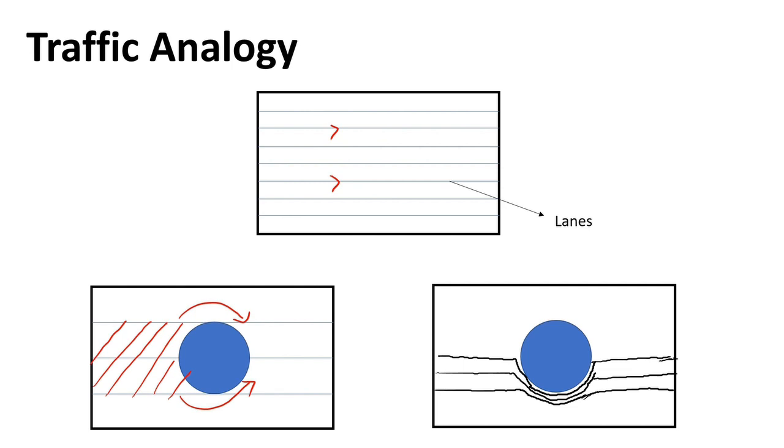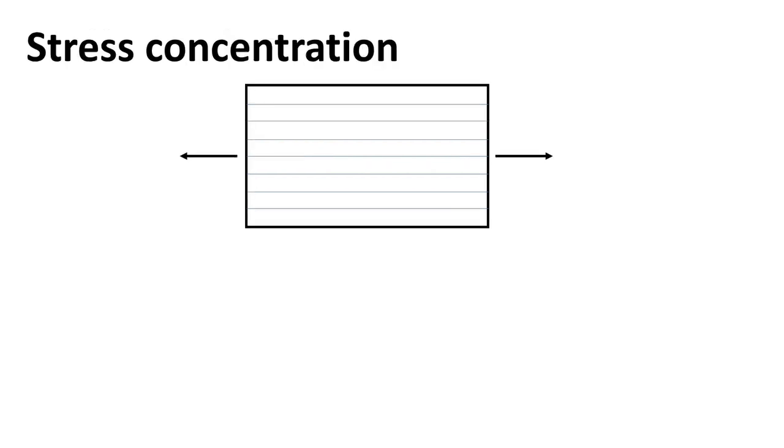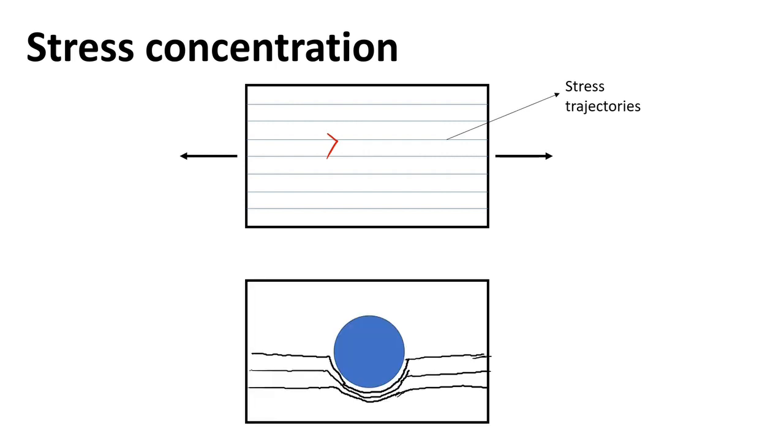Note that there is a congestion here, and hence accidents may happen. Switching gears, when we apply loads to a structure, there will be a stress flow inside the material. And when there is a hole, like in traffic, we will have a congestion in stresses here, which is called the stress concentration. This means that the stress here will be higher than the stresses somewhere here, and this is why we saw that the paper failed here. And that's stress concentration for you.